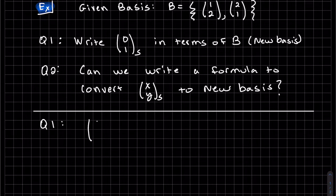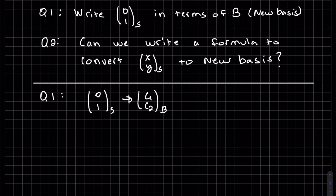We remember from two videos ago, we were able to convert a vector that's in standard bases to a new bases, writing it as a linear combination. And it turned out that those constants, writing it as a linear combination, was my new vector. So let's do that.